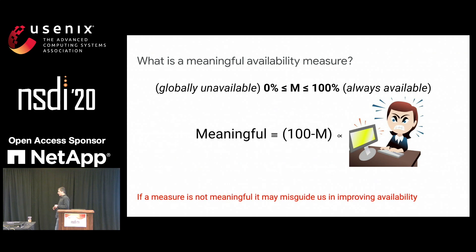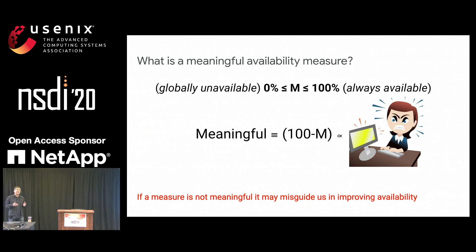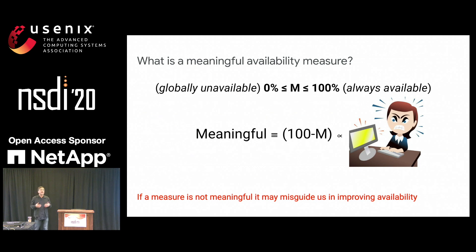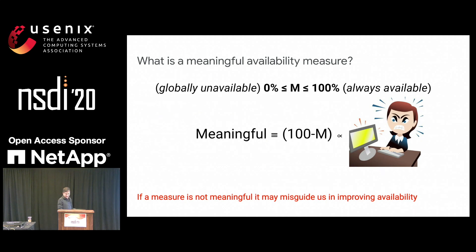If a measure is not meaningful, the problem is that it might guide us — the Google engineers — towards optimizing and fixing the wrong problems. So a non-meaningful measure is actually misleading.